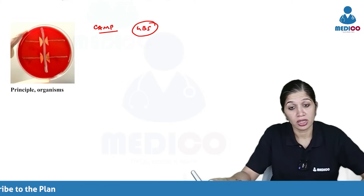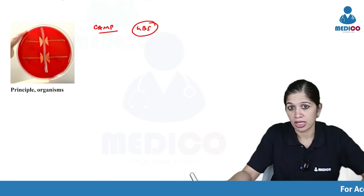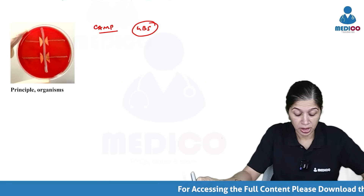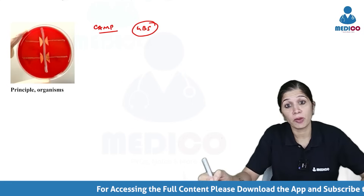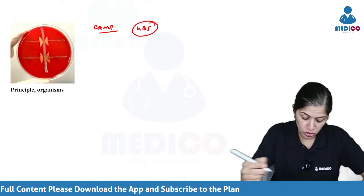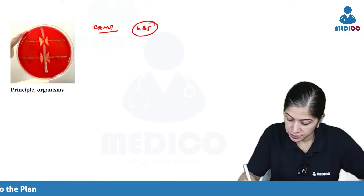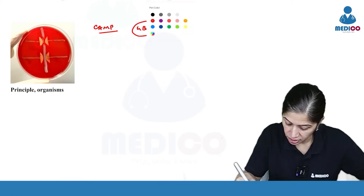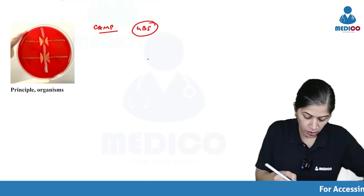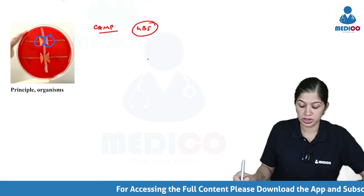Here you've got a beta hemolytic strain of Staphylococcus aureus, and perpendicular to that you're streaking the Group B strep. This Group B strep will produce something called the CAMP factor, which enhances the hemolysis of the staphylococci. You can see an enhanced zone of hemolysis — that is the CAMP test positive.